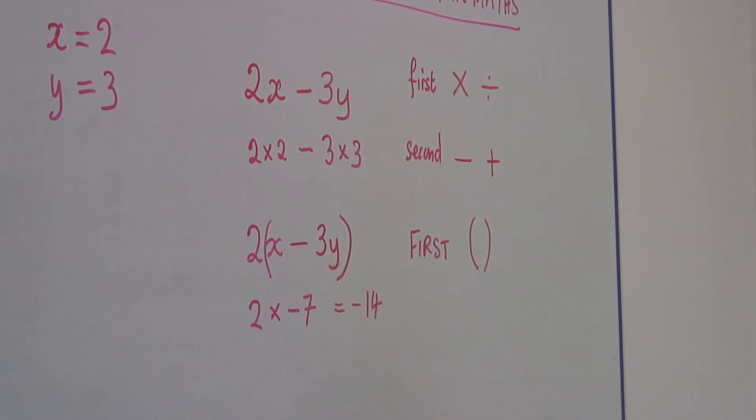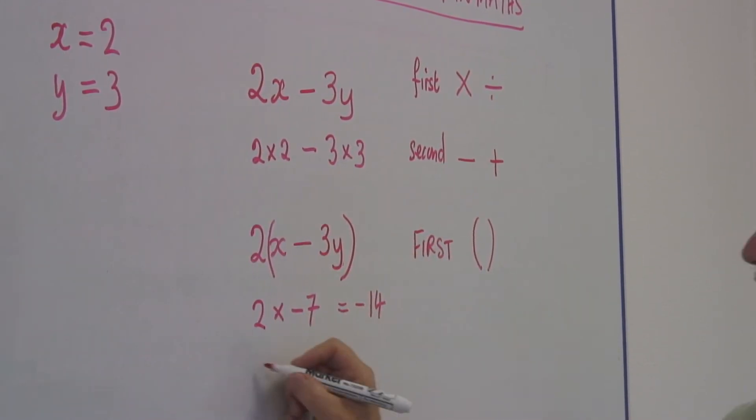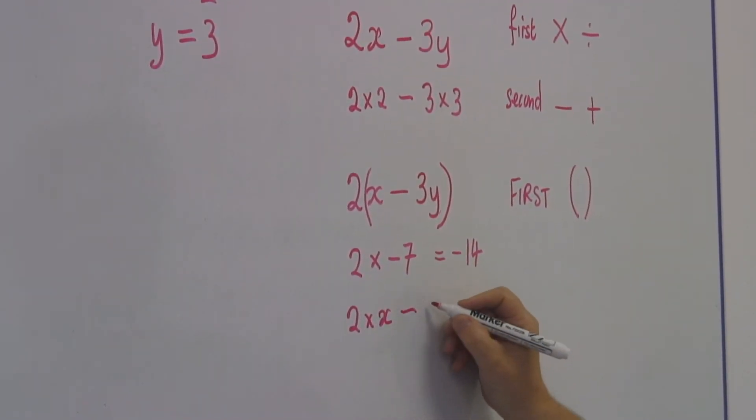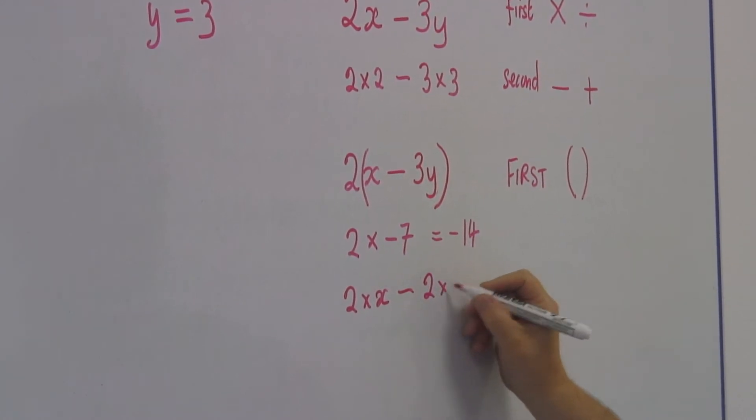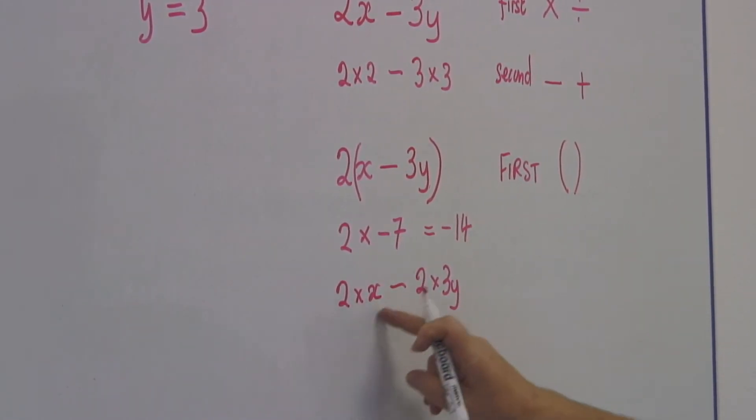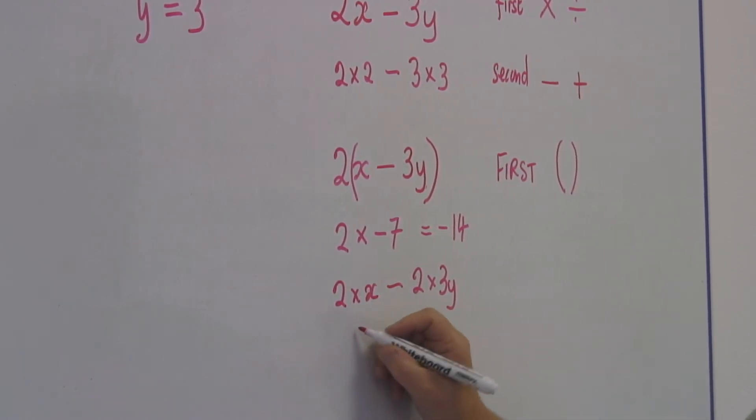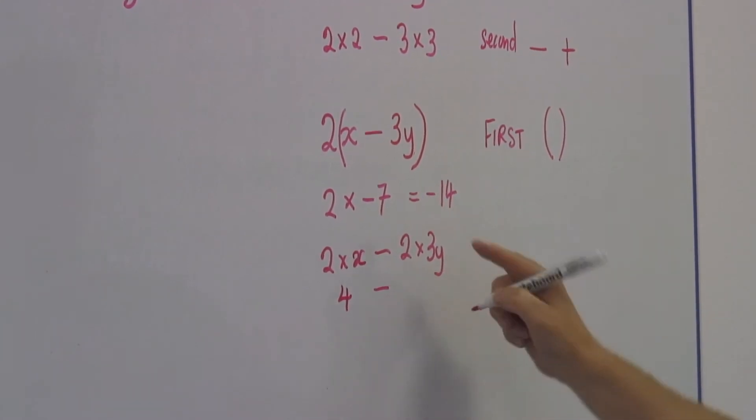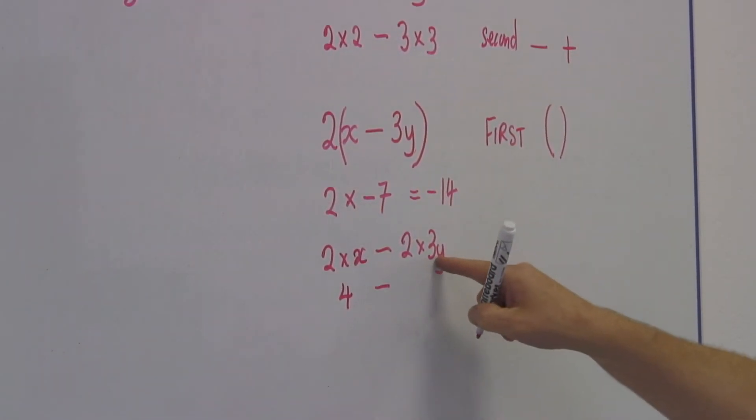Also, I can write this in another way. It can be 2 times x minus 2 times 3y. 2 times x is 2 times 2, which is 4.